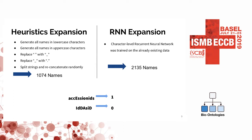Then we took all these names and trained a recurrent character-level recurrent neural network on the existing data, so we ended up with over 2,000 names. For all these names, we actually manually labeled them for positive and negative examples — words that made sense to a human being, even if they had both uppercase and lowercase characters, were labeled as positive examples, while words with just a random order of characters were labeled as negative examples.